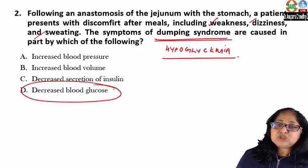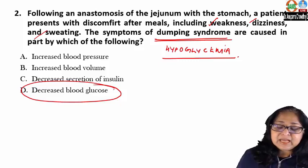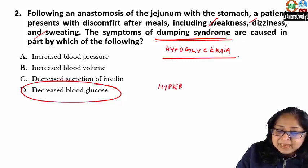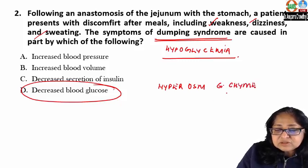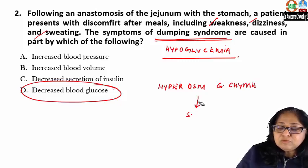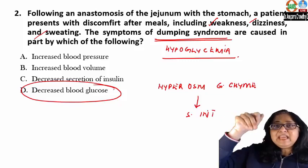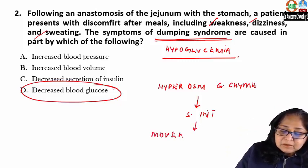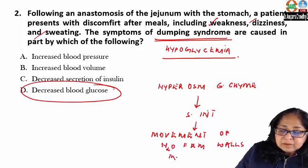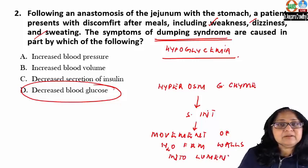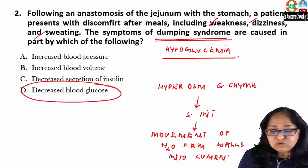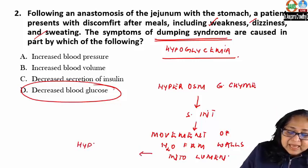Another thing that can happen in dumping syndrome is hypotension. The reason is that hyperosmolar gastric chyme enters the small intestine, and this causes movement of water from the walls of the small intestine into the lumen. That results in hypovolemia and hypotension, which also contributes to the symptoms of dumping syndrome.